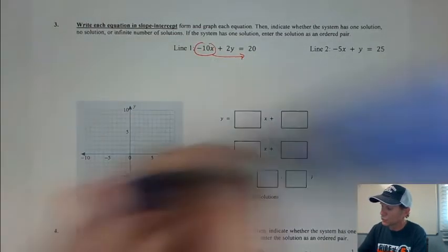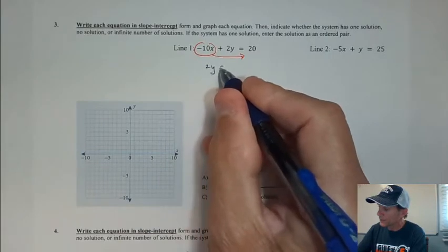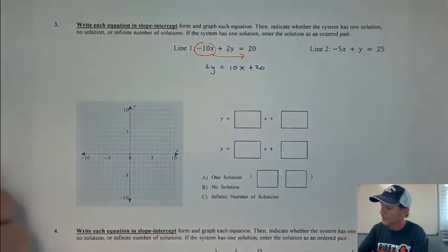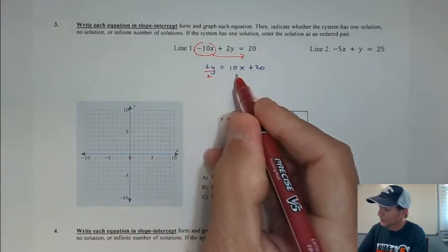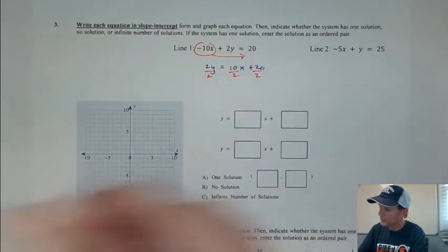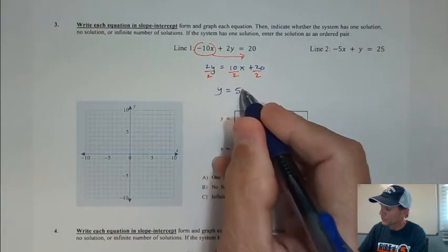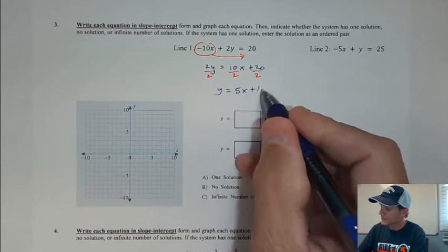I get 2y equals 10x plus 20, and then I'm going to divide by 2, dividing by the number in front of y here. This is getting the equation into slope-intercept form. I get y equals 5x plus 10.